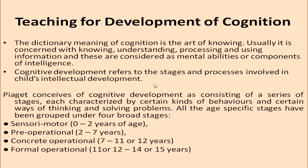Cognitive development refers to the stages and processes involved in a child's intellectual development. Piaget described cognitive development as consisting of a series of stages that are universal and sequential, each characterized by certain kinds of behaviors and certain ways of thinking and solving problems. The four broad stages are: sensory motor (birth to two years), pre-operational (two to seven years), concrete operational (seven to eleven or twelve years), and formal operational (eleven to fifteen years).